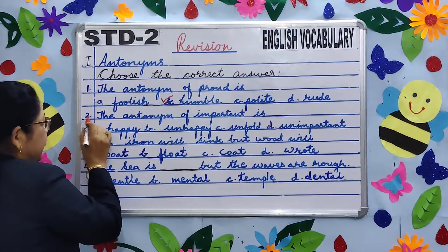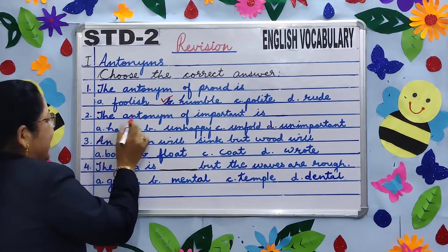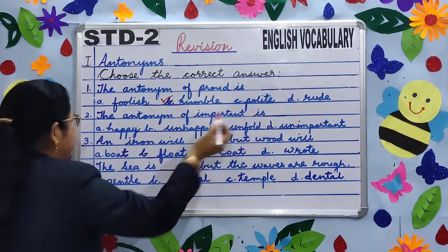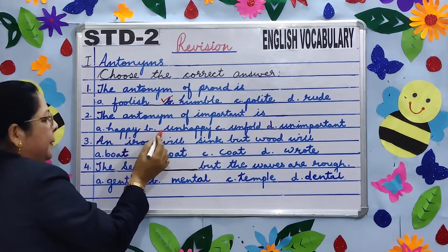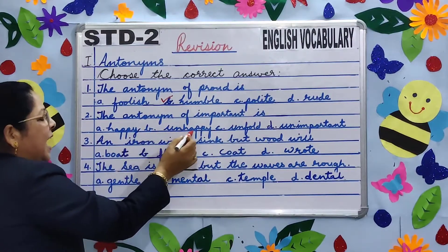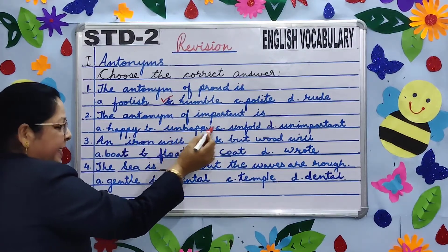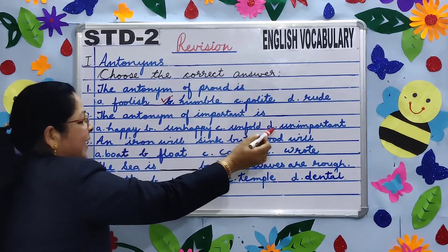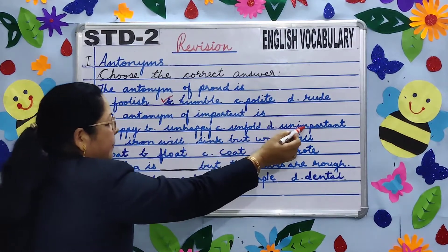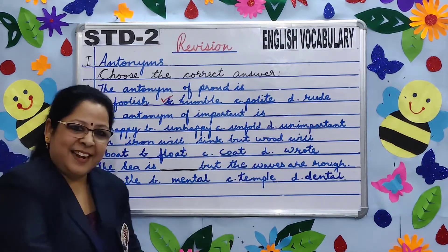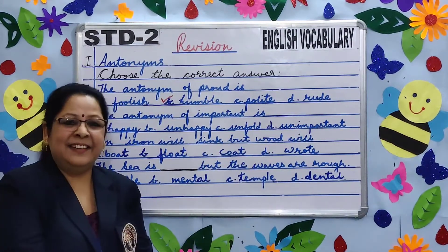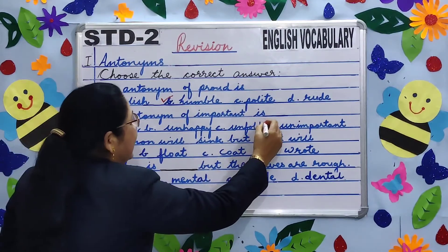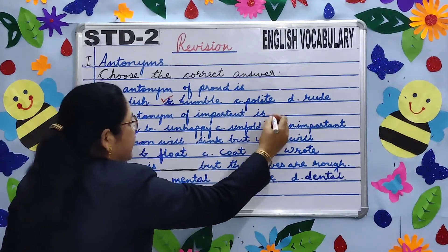Number two. The antonym of 'important' is: A. Happy, B. Unhappy, C. Unfold, D. Unimportant. Which is the right answer? Very good — D. Unimportant.